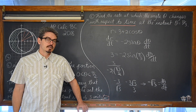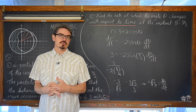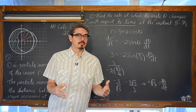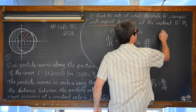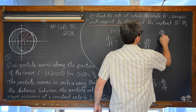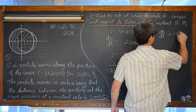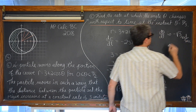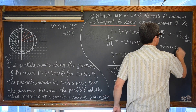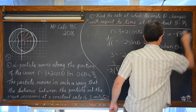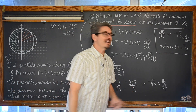Always use correct units of measure when they are given in the problem. d theta/dt equals negative square root of 3 radians per second when theta is equal to pi over 3. Note this is not a constant rate — it is specifically at that instant. That is number 5.